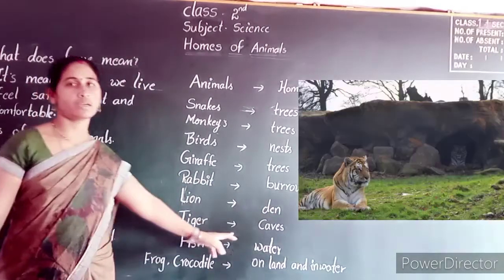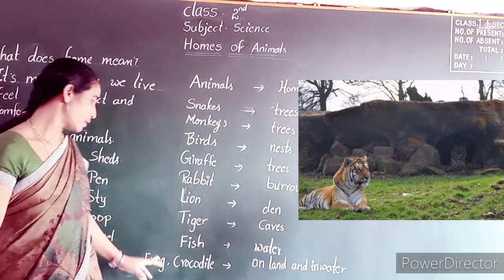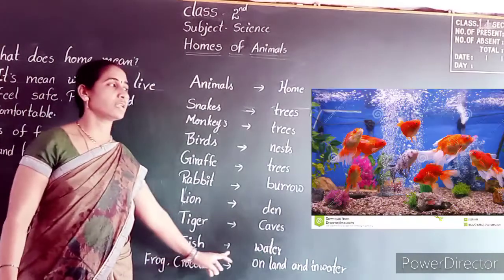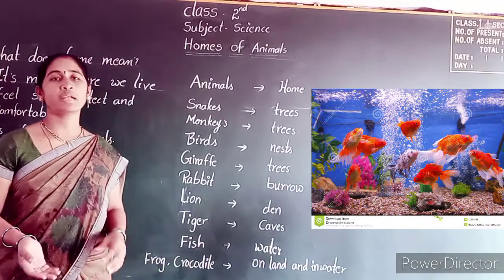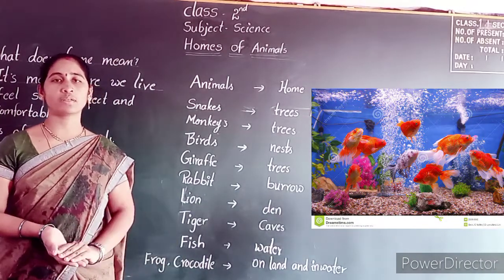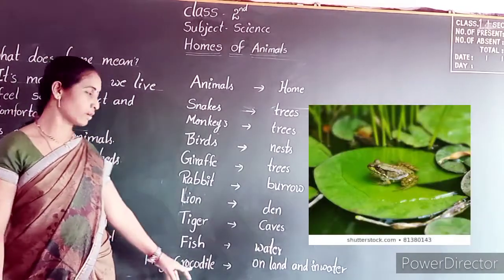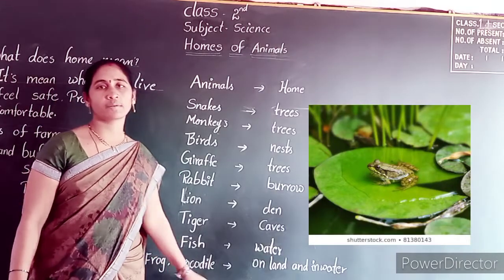Rabbit — rabbits make burrows, they live in burrows. And lions — lions live in a den. And tigers — tigers live in caves. Fish — fish live in water. Some animals live on both land and water — those are frogs and crocodiles.